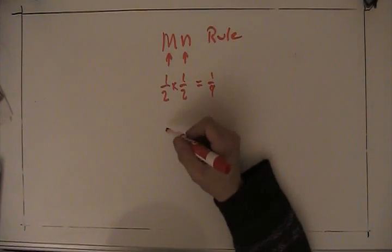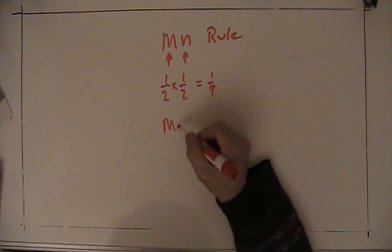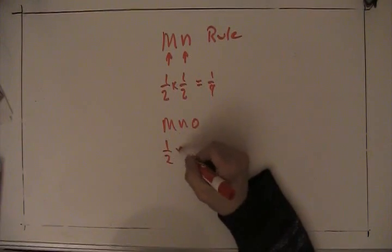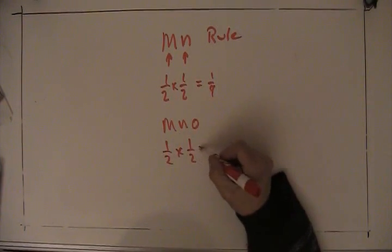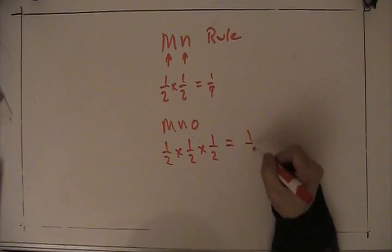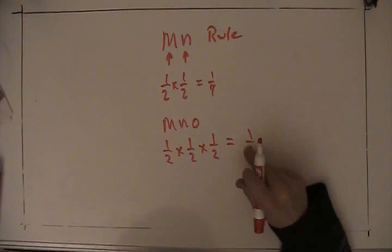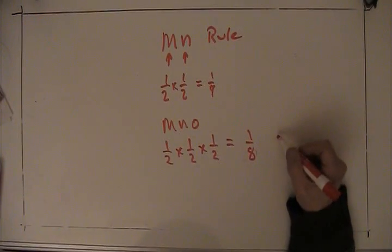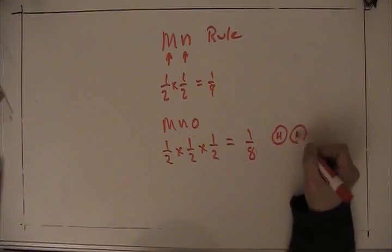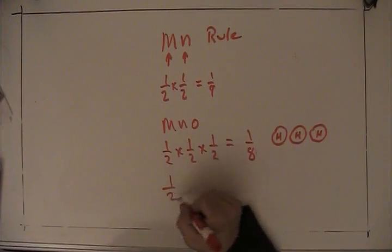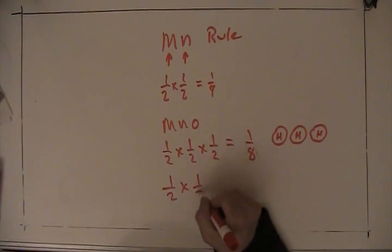If we did three coin tosses, it would be MNO. So we would go one-half times one-half times one-half equals one-eighth. And that's our probability of getting three heads in a row. And it's also equal to the probability of getting three tails in a row.